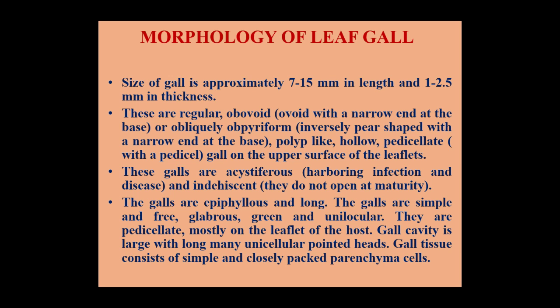Morphology of Leaf Gall: The size of the leaf gall in Pongamia pineta is approximately 7–15 mm in length and 1–2.5 mm in thickness. These leaf galls are regular obovoid, or they may be obliquely pyriform, or they may be polyp-like hollow pedicillate galls on the upper surface of the leaflet. Obovoid means ovoid with a narrow end at the base. Obliquely pyriform means inversely pear-shaped with a narrow end at the base. Pedicillate means with a pedicel. These galls are acystiferous as they harbor infection and disease, and they are also indehiscent as they do not open at maturity.